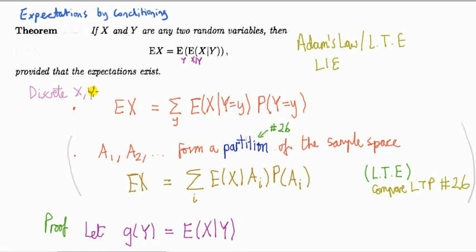Y doesn't have to be a random variable. It could be some event. So I'll say a1, a2, and so on. It forms a partition of the sample space.